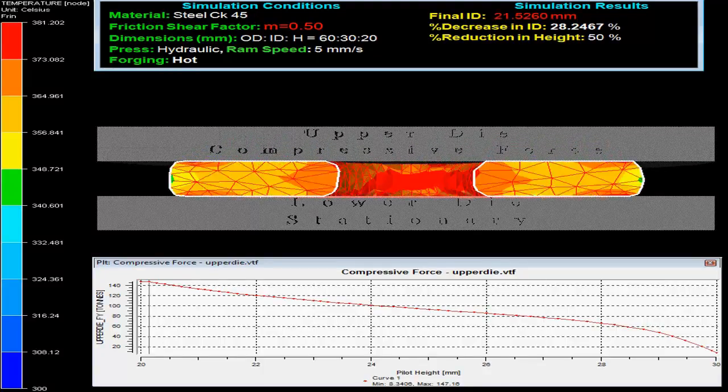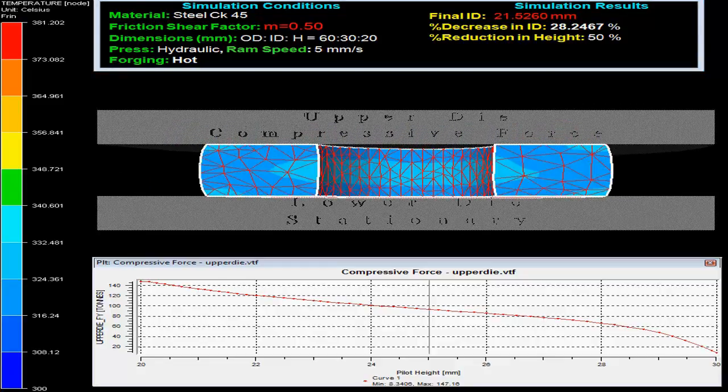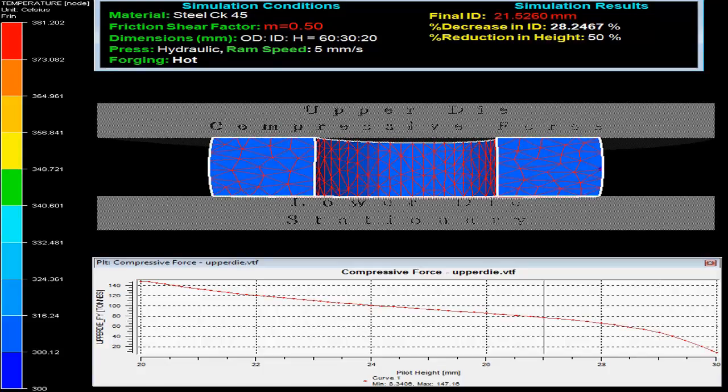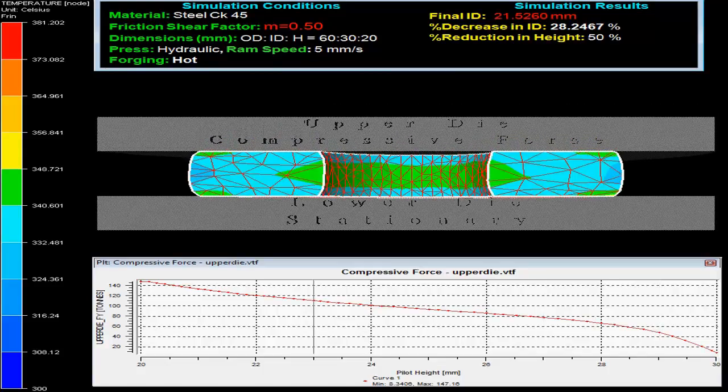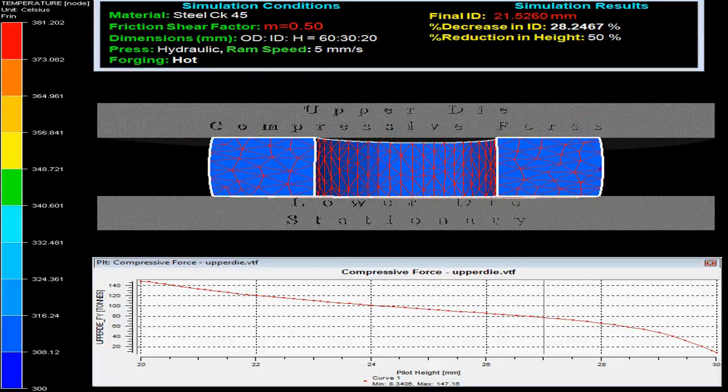On the top left corner in the video, one can observe the simulation conditions. The specimen material is steel with friction shear factor M as 0.5 and initial outer diameter to inner diameter to height ratio as 60 to 30 to 20.